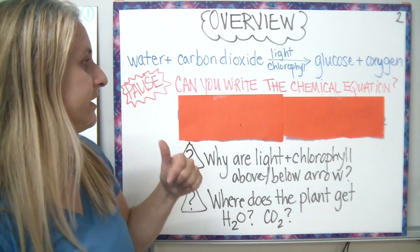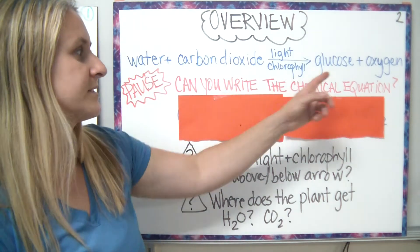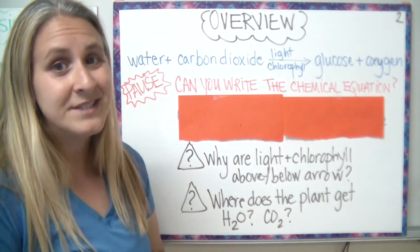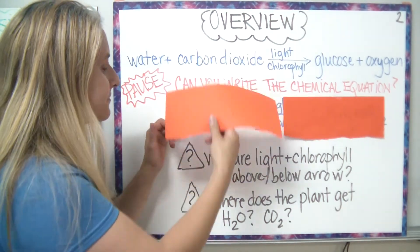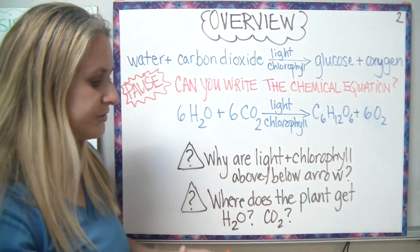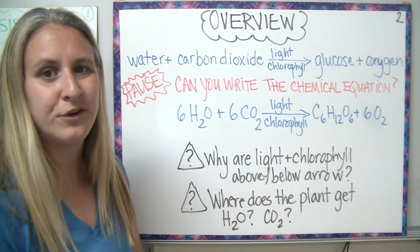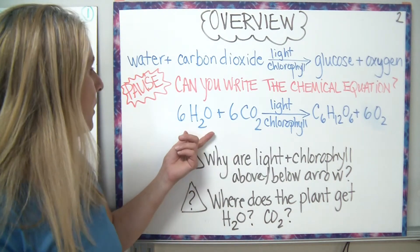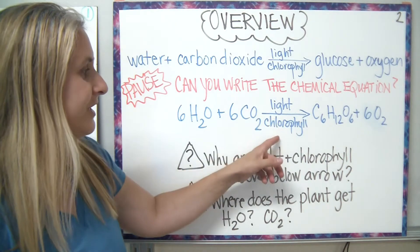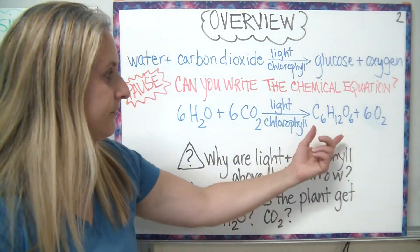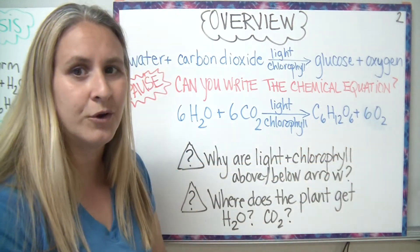I'd like you to pause and try to write the chemical equation. Use the chemical formulas for water, carbon dioxide, glucose, and oxygen — see what you come up with. Now that you've paused, let's see how you did. I'm sure you probably didn't come up with the numbers in front of the formulas — we'll discuss that briefly, but see if your equation is right. Water: H2O. Carbon dioxide: CO2. The light and chlorophyll were there for you already. Glucose: C6H12O6. And oxygen: O2.